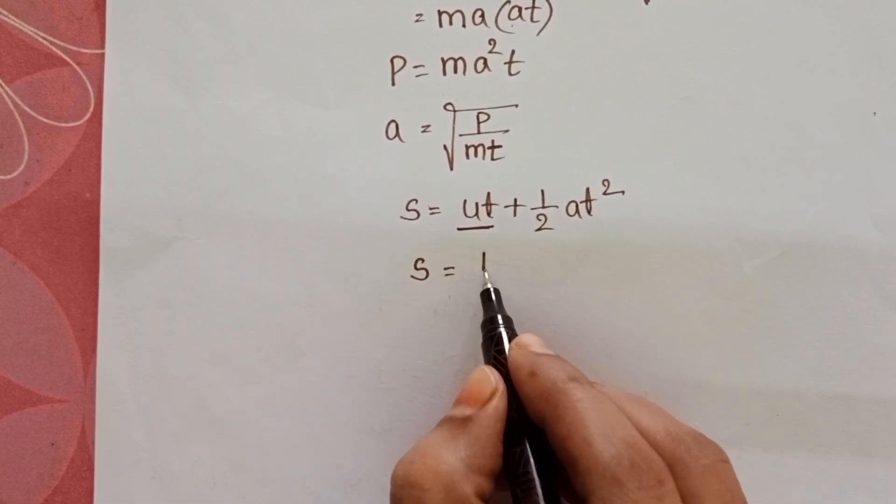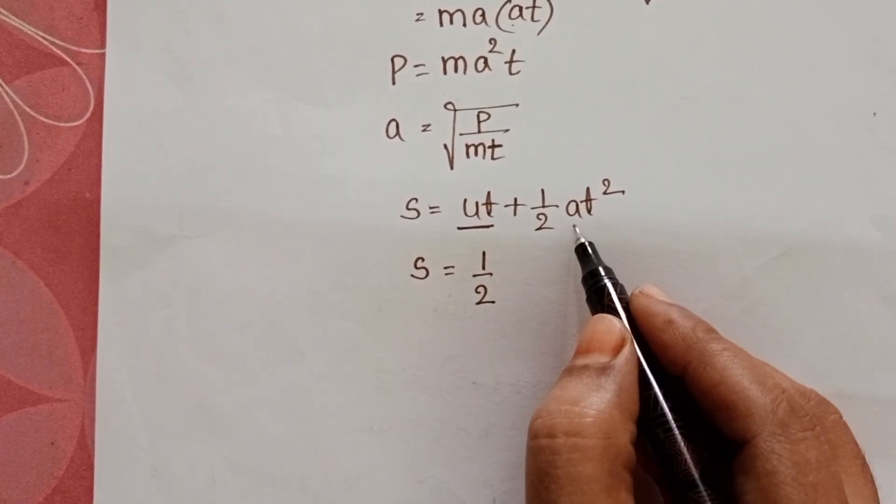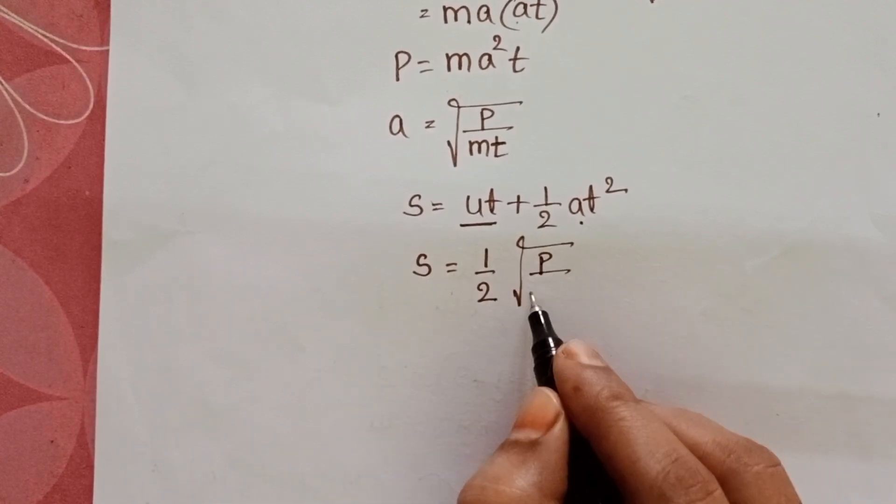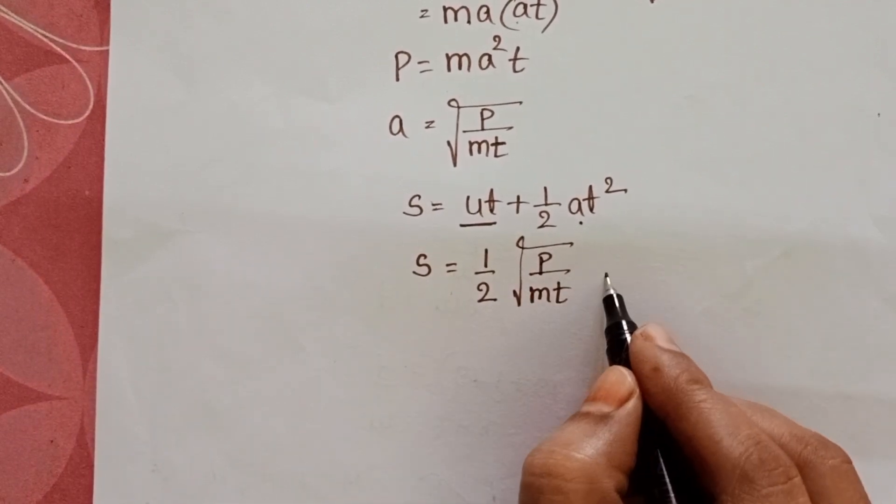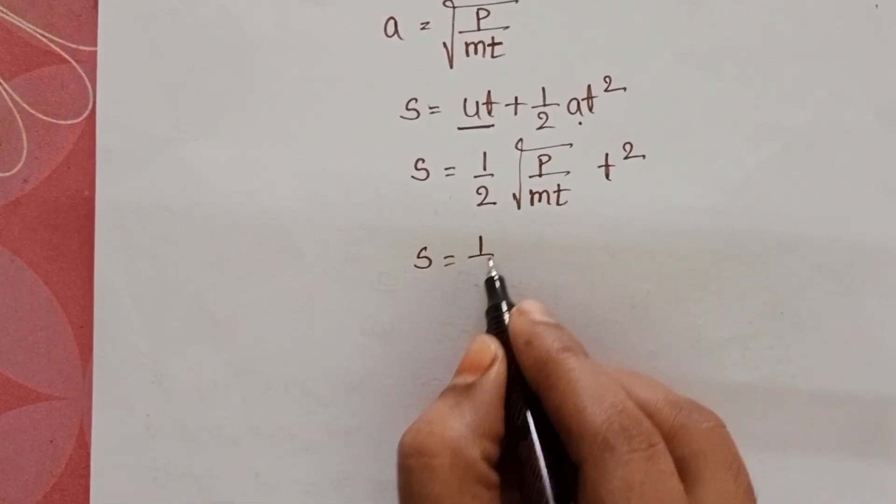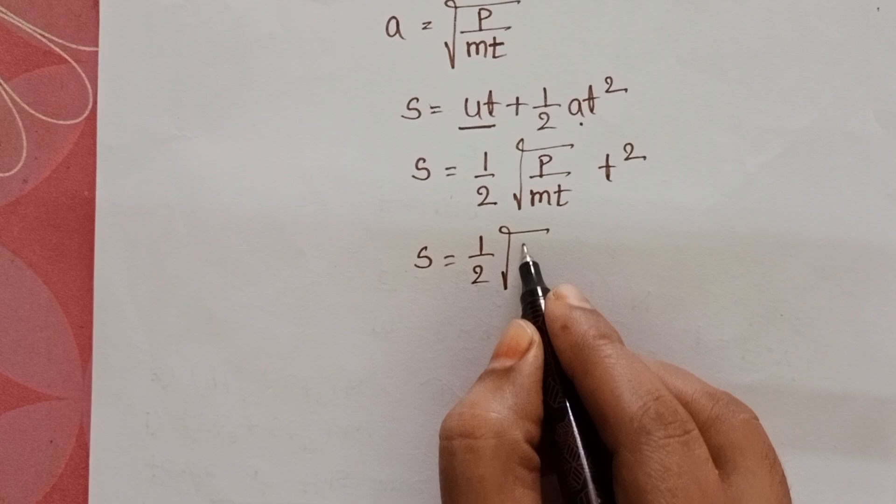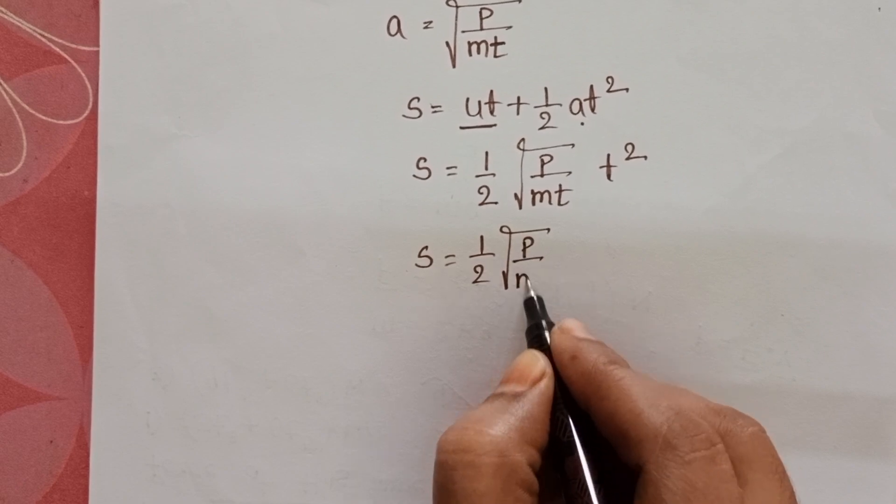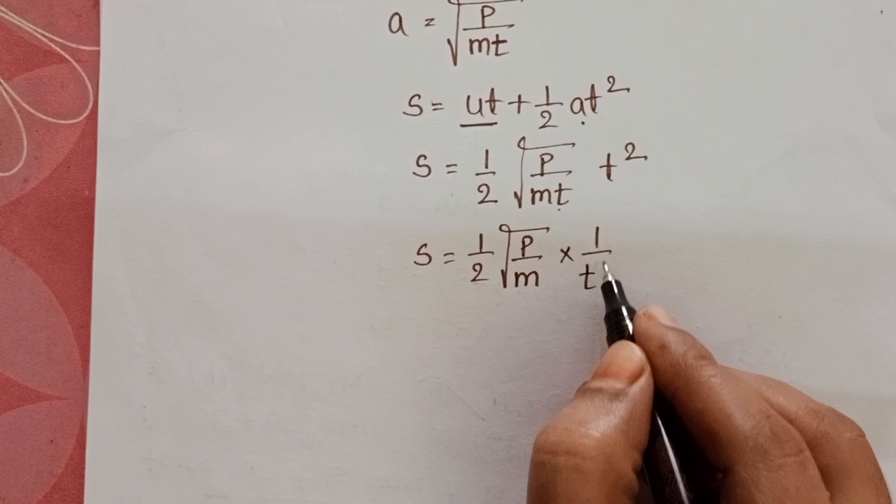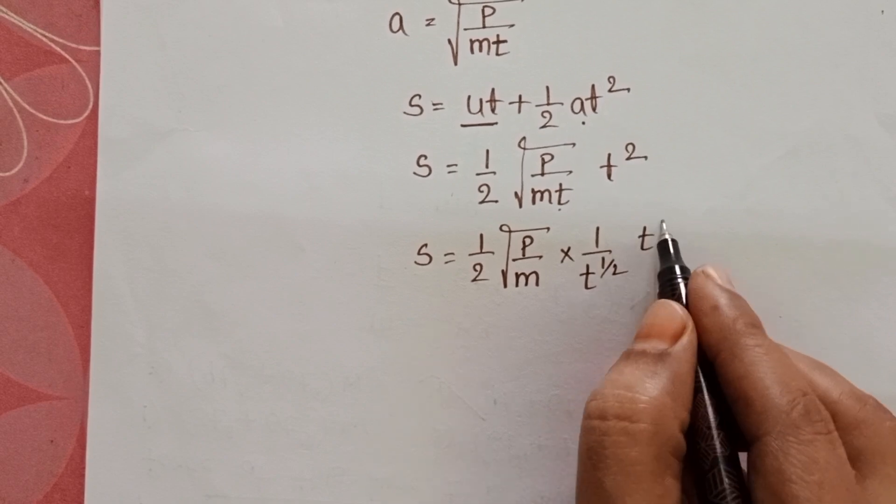Displacement equals half into, in place of acceleration, substitute square root of P by mt into t square. Now S equals half square root of P by m. And write this time, 1 by t power 1 by 2. Here, t square.